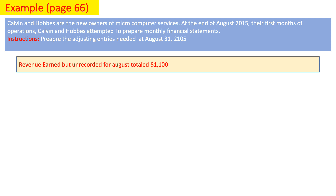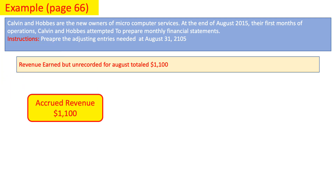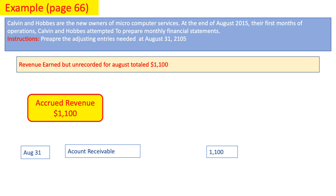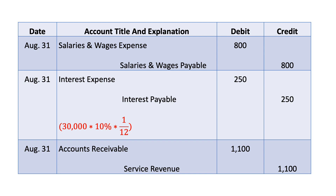Third, revenue earned but unrecorded for August totals $1,100. We have a revenue the accountant did not record yet, or we did not bill it yet — an accrued revenue of $1,100. We prepare an entry to record this: debit accounts receivable for $1,100 since we did not get paid yet, and credit service revenue for $1,100. This is how the adjusting entries look in the journal voucher.